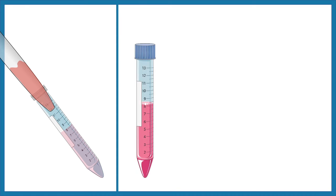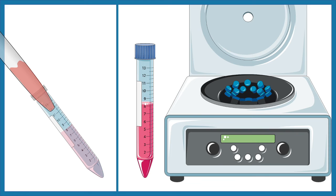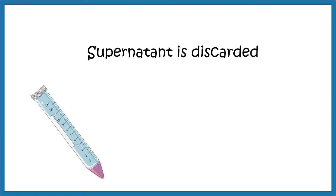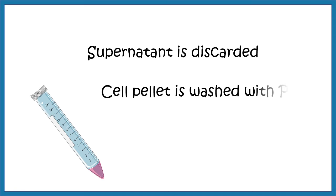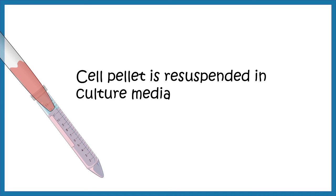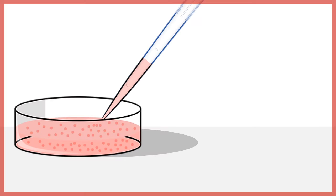After making the cell suspension, you count the cells to estimate how many to plate — roughly one to 1.5 million cells is a good starting amount, depending on the container, such as a 10 cm plate. You resuspend the cells in media, then centrifuge and wash them, because residual trypsin in the media would be harmful. The supernatant is discarded and the cell pellet is retained. The cells are then washed with PBS, resuspended in culture media, pipetted vigorously to break clumps, and finally plated.